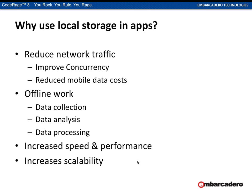Also, if you want to do offline data work — traditionally used a lot more in enterprise for laptops, taking things into the field, doing data collection, analysis, and processing — the same things apply for mobile. If you're on the train, or in the middle of the countryside with no data signal, or in the middle of large concrete buildings where mobile reception is difficult, there are good reasons to use offline data. A big benefit is increased speed and performance, scalability, and improved operational performance as an organization.